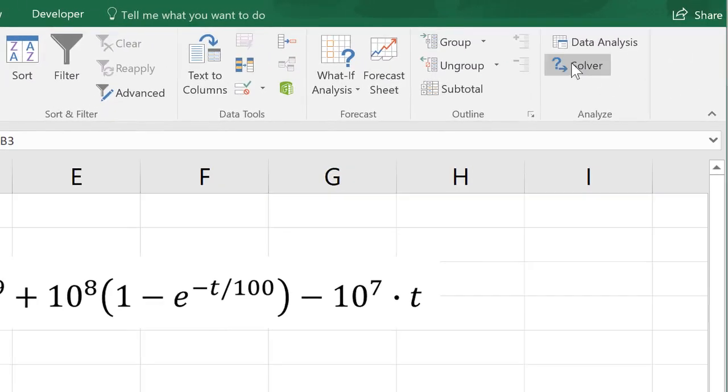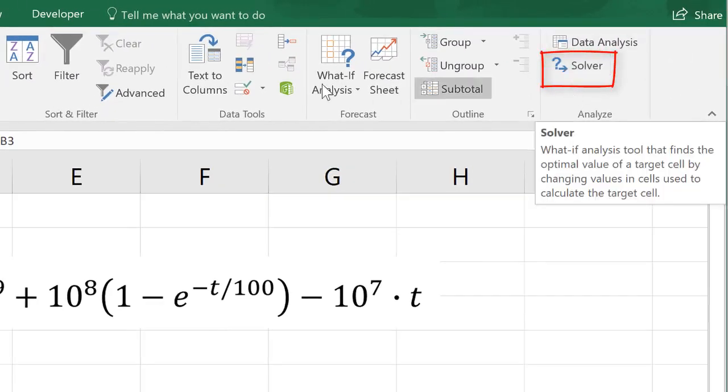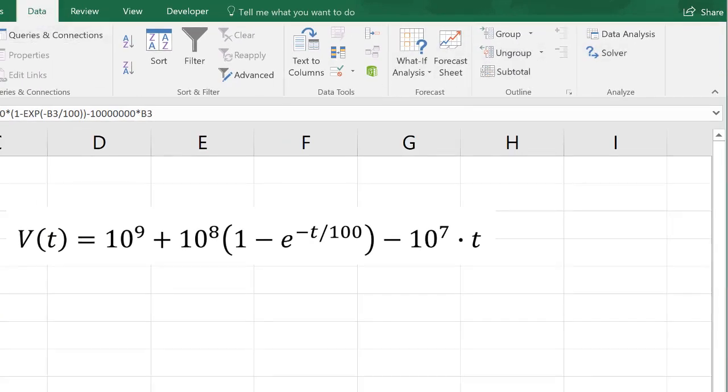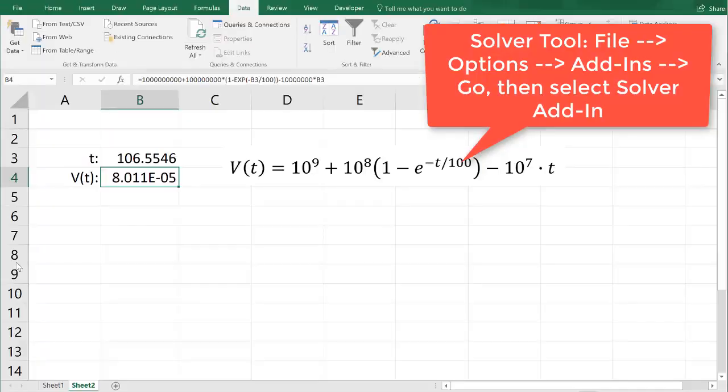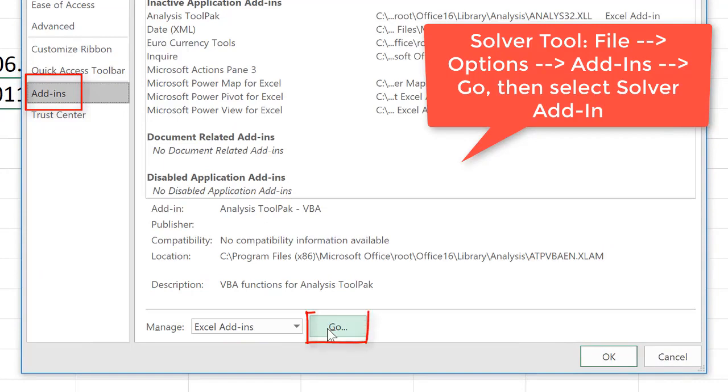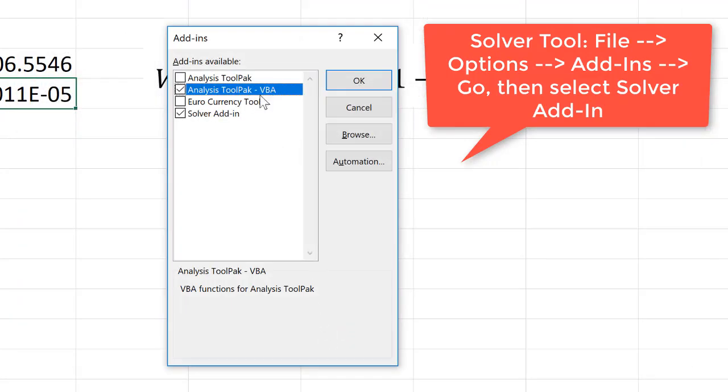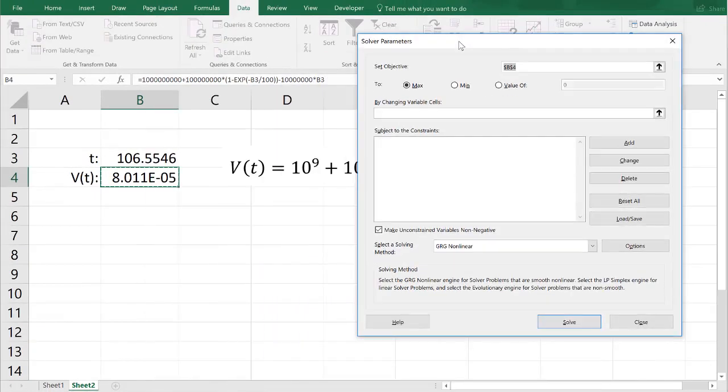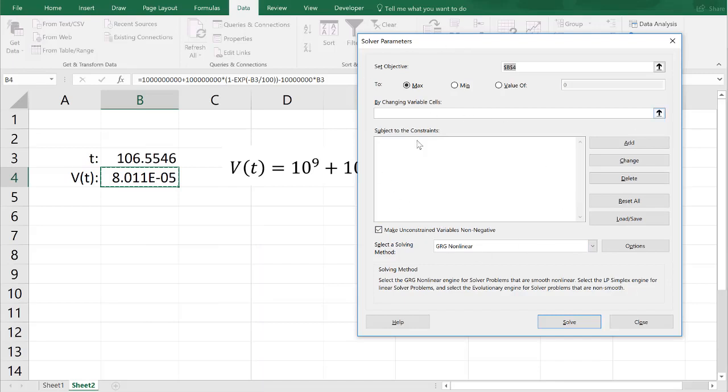We can also use, there's a solver tool over here on the data tab, on the ribbon, data ribbon. If that's not showing, you can always go into File, Options, Add-ins. And then you can go down here and click Go. And you can click the Solver Add-in. So, let's go ahead and run the solver. The solver tool kind of does the same thing. The solver tool has a lot more stuff. We'll talk about it's more important and more valuable for doing optimization scenarios.